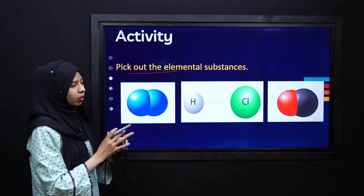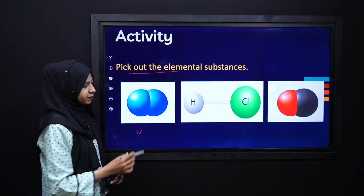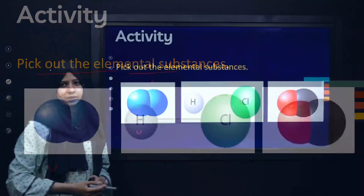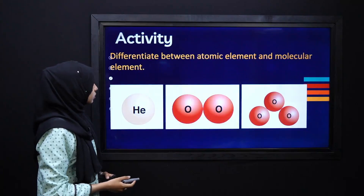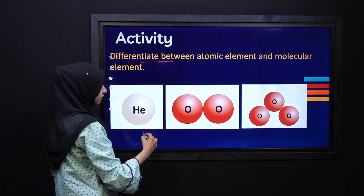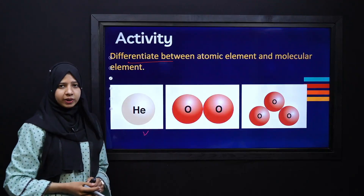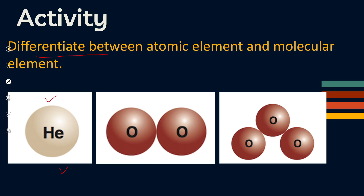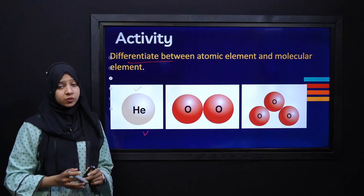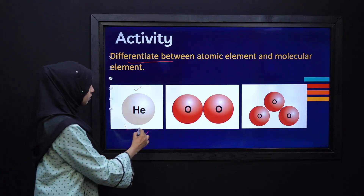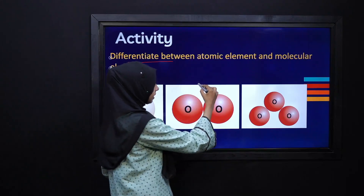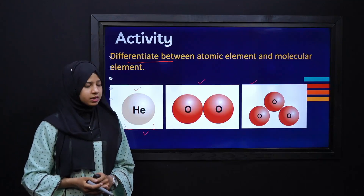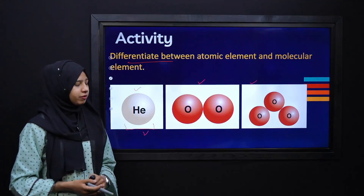Activity one: Pick out the elemental substance from the given pictures. The first one is an elemental substance. Moving to the second activity: from the given pictures, differentiate between atomic elements and molecular elements. If we talk about atomic elements, we have an individual atom that is helium — this is an atomic element. The rest of the two are molecular elements, as they are made up of the same type of atoms.